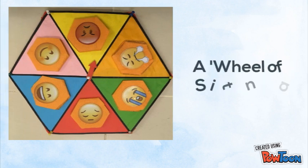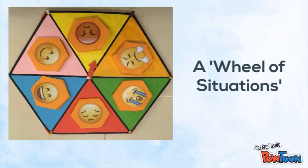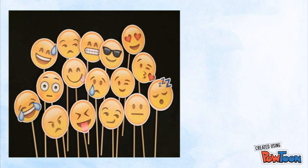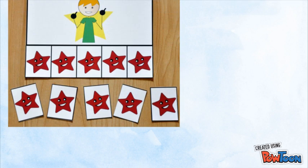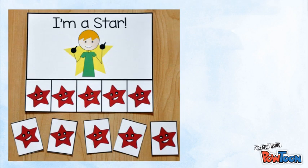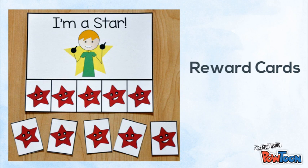The first material needed for this activity is a wheel of situations. Next, we will also be needing emoji sticks. The last material we need is a reward chart, which will represent the rewards and the stars that you will give.